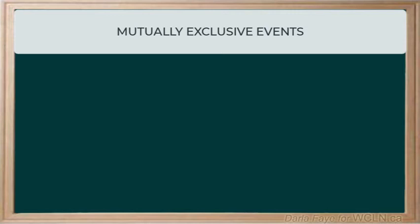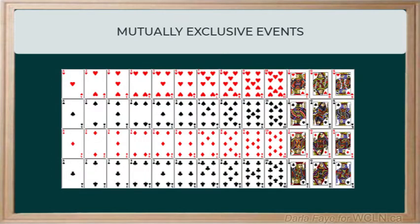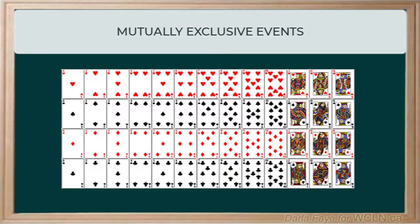An example of a mutually exclusive event might be something like selecting a card from a deck that is either a queen or the number 10. It is not possible for me to select both a queen and a 10 at the same time.